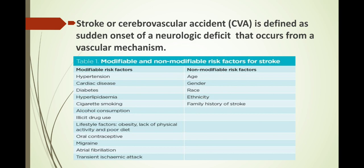Non-modifiable risk factors include age — as you grow older, the chances of developing a stroke are higher. Gender — it's more common in males than females. Race and ethnicity — it's common in certain racial and ethnic backgrounds. And family history — if you have a family history of stroke, your chances of developing one are also high.